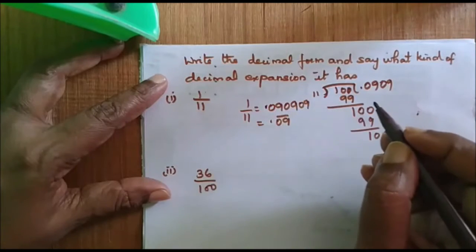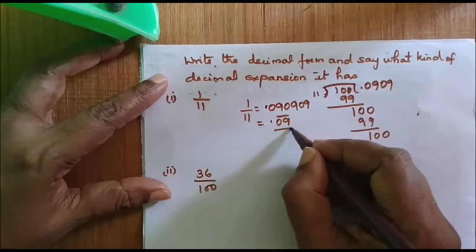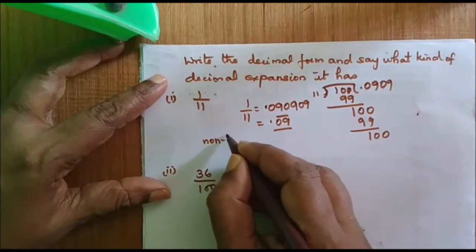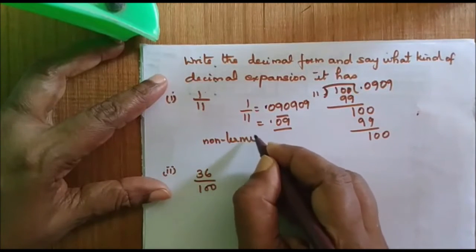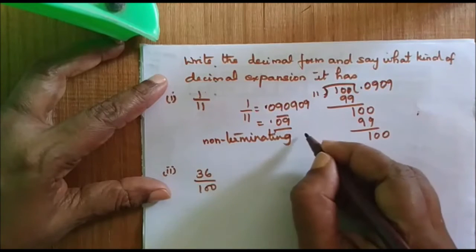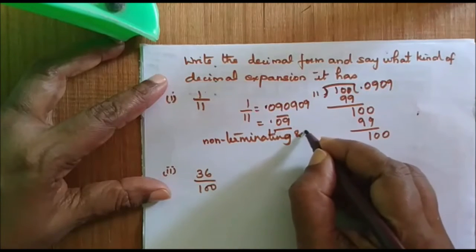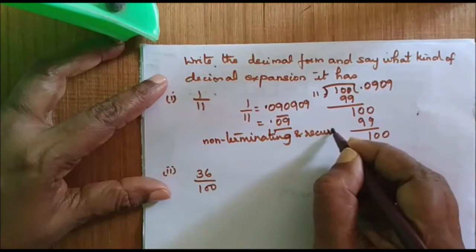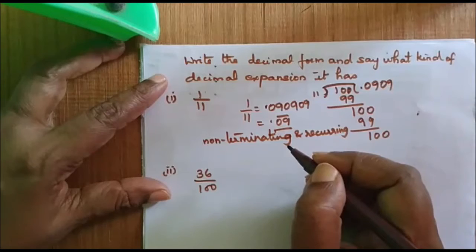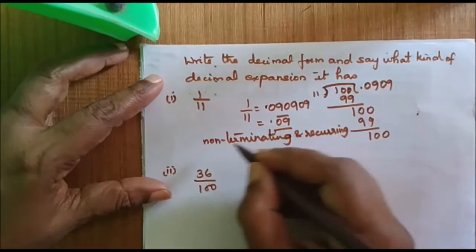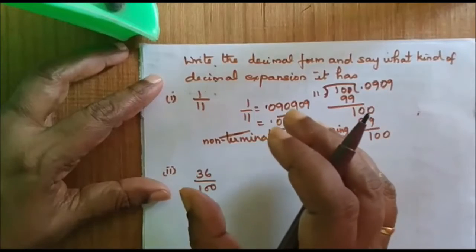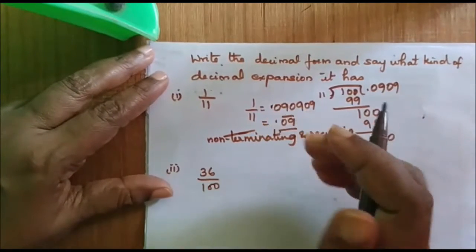This 0.09 comes on recurring, so such numbers are called non-terminating recurring. What is repeating here? 0.09. And why is it non-terminating? Because the remainder never comes to 0.